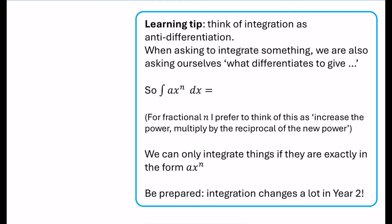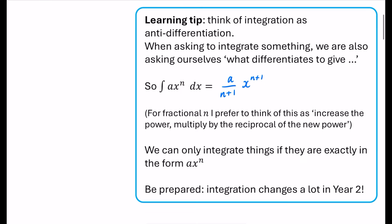If we're going to integrate AX to the power of N, think about what we normally used to do — we pulled the power down and reduced the power by one. Reversing that, we increase the power by one, and instead of pulling the power down, we have it as A divided by N plus one. For fractional powers of N, I prefer to think of it as: increase the power by one, then multiply by the reciprocal of the new power, rather than dividing by a fraction.